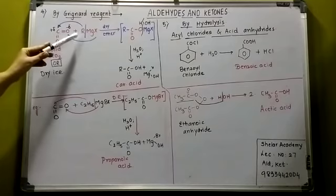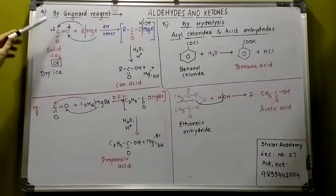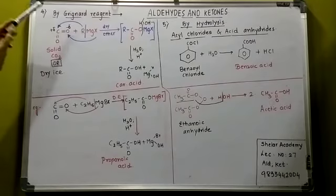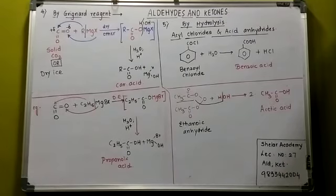And then the Grignard—ye jo negative charge hai, ye yahan pe jayega carbon pe because it is having a positive charge. And this MgX will go to oxygen. That is the magnesium intermediate which is formed. Uska agar acid hydrolysis kiya, then it is converted to the corresponding carboxylic acid.